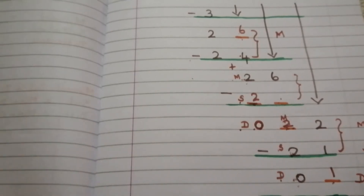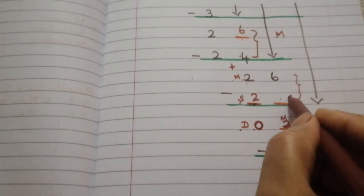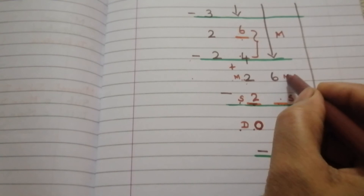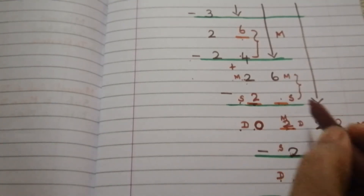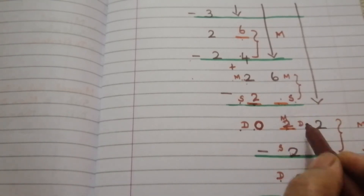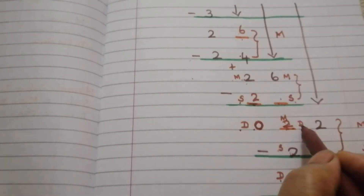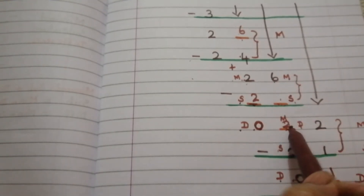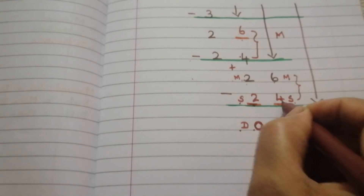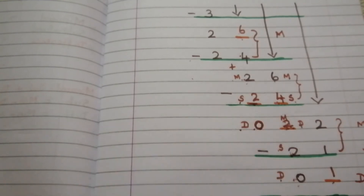Now we can find this dash. This is the subtrahend, this is the minuend, and this is the difference. To find the subtrahend, we subtract the difference from the minuend: 6 minus 2 gives us 4. So this value is 4. Verify: 6 minus 4 is 2, so our answer is correct.